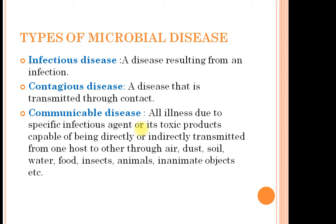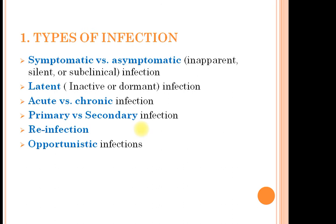Different types of microbial disease: infectious disease or infection means the disease resulting from the infection process. Contagious disease is that disease which is transmitted through contact — this contact can be direct or indirect. Communicable disease means those diseases which can spread from the infected to the healthy person; they are transmitted from one host to another by means of air, dust, soil, water, food, insects, animals, inanimate objects, etc.